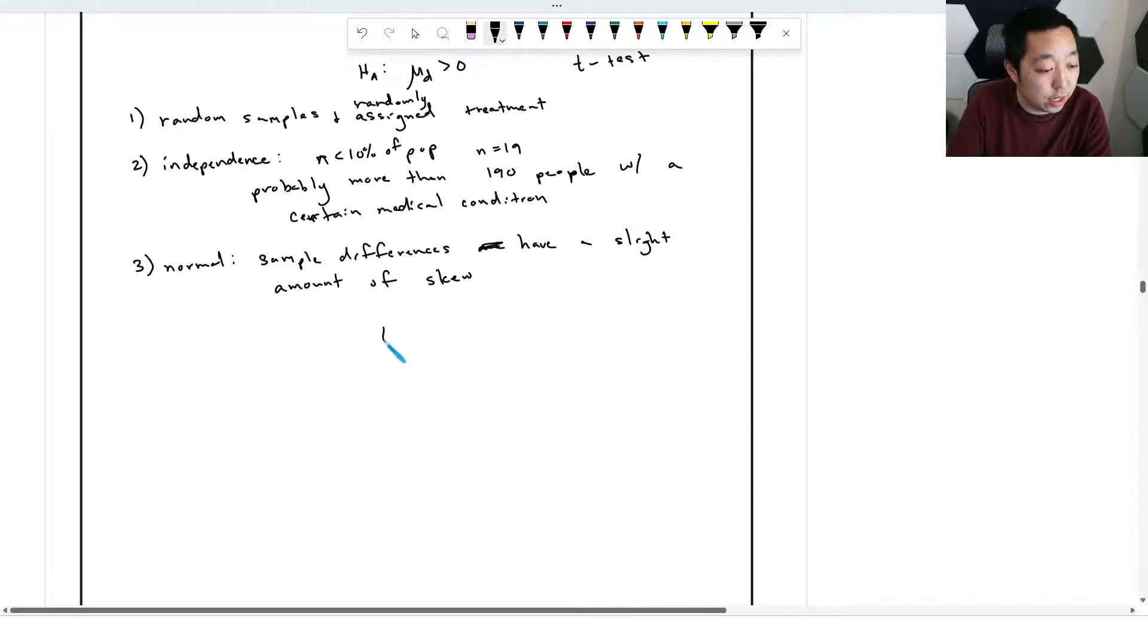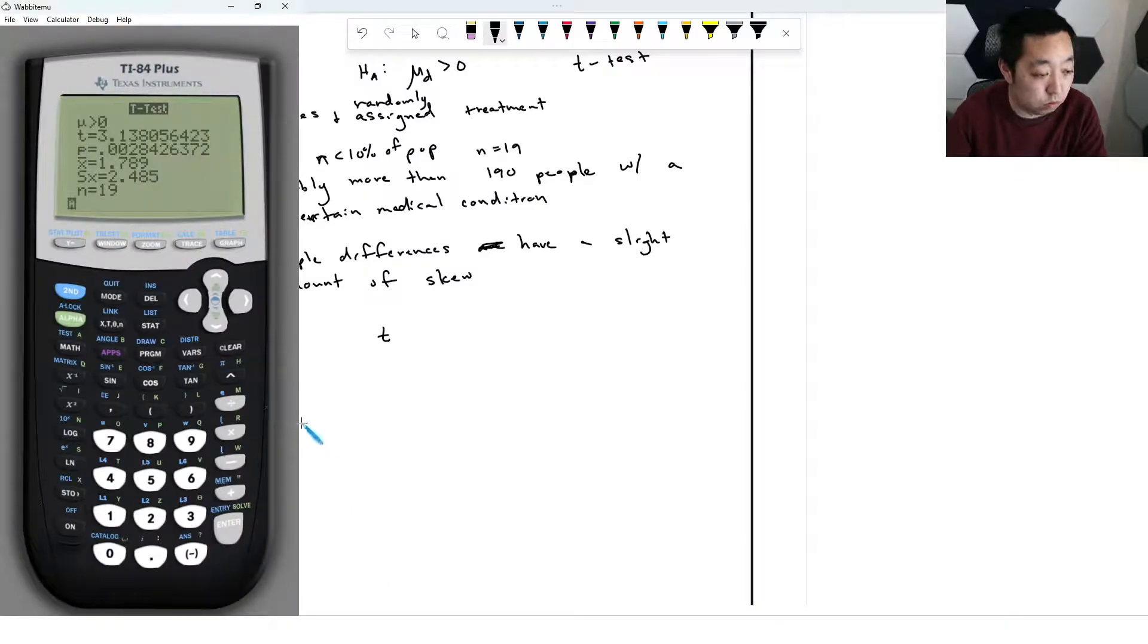So then we'll calculate. The t value is 3.138 and the probability value is 0.002842.